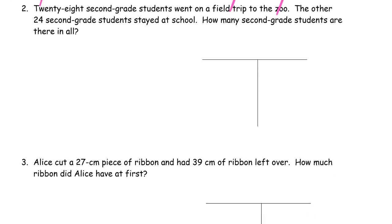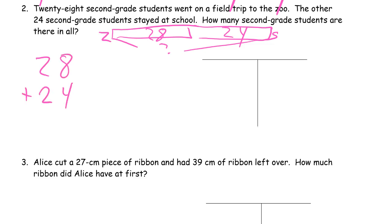28 second-grade students went on a field trip to the zoo. The other 24 second-grade students stayed at the school. How many second-grade students are there in all? So we're adding. 28 went to the zoo and the 24 who stayed at school. How many are there in all? We want to know the whole thing. So that's 28, 24. 8 and 4 is 12, that's a 10 and 2 1s. 2, 4, and one more it's 5, 52. We're going to draw that in the place value chart with the disks.